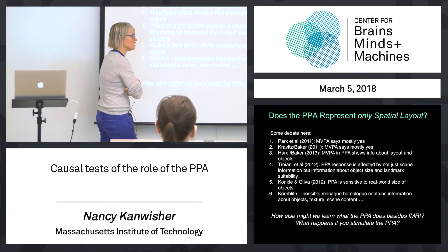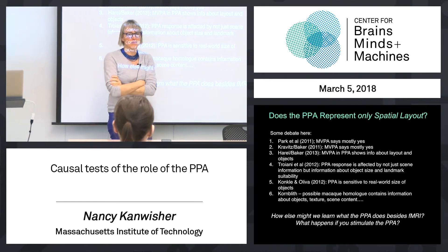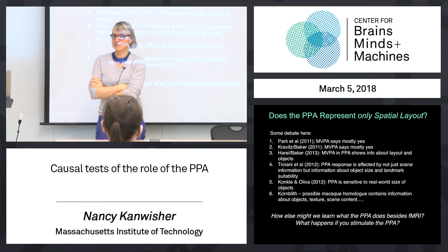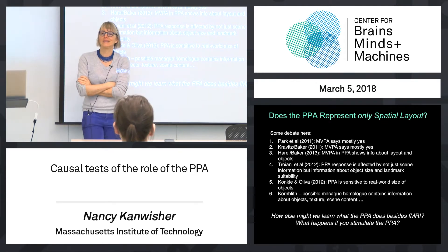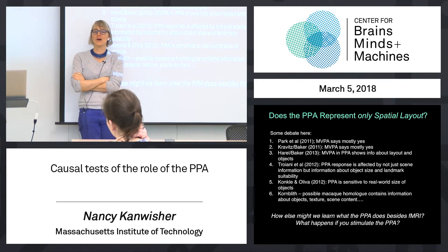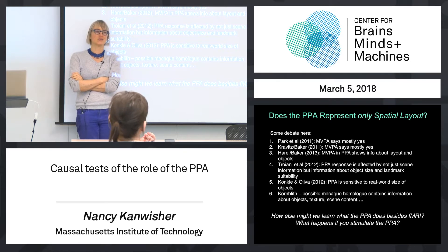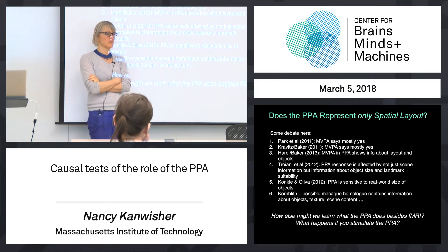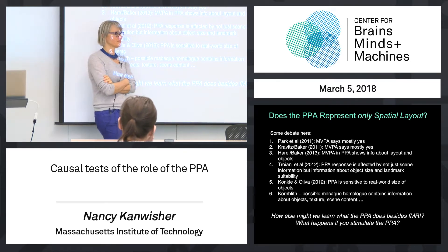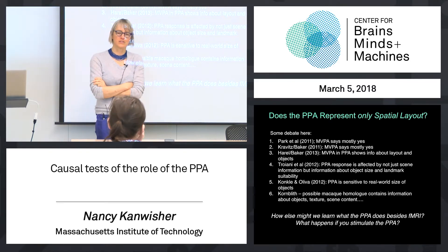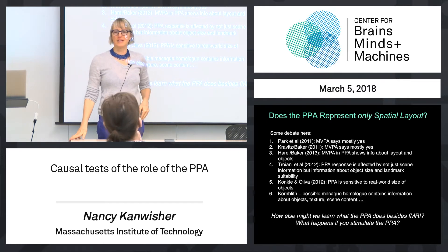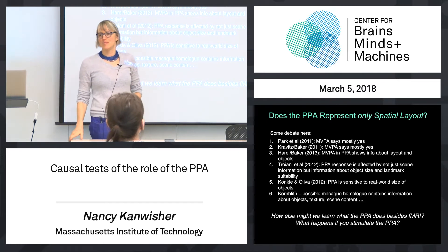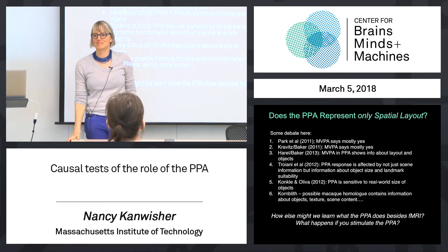All of this is functional MRI — really ancient functional MRI. Why would we want to use any other methods besides functional MRI to try to understand what the PPA is doing? We could just do only functional MRI and not use any other methods and make all our claims. What would be the problem with that?